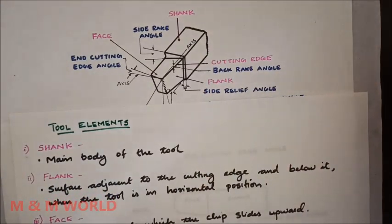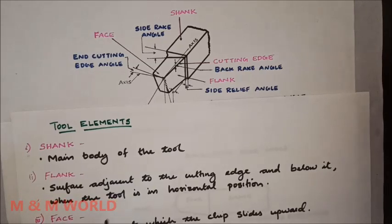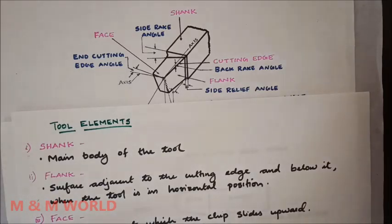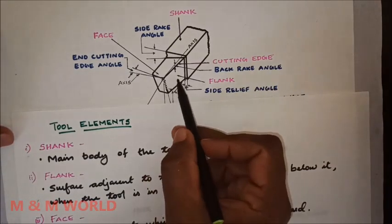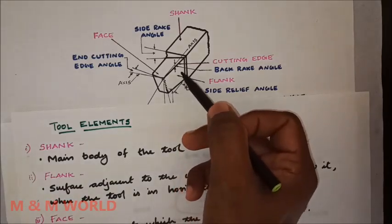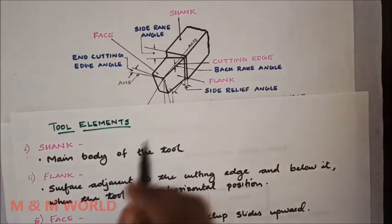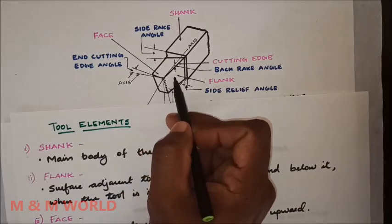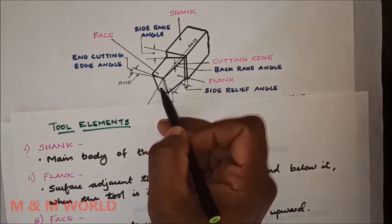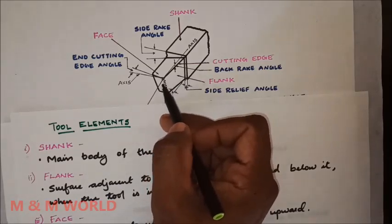The second element is the flank. The flank is the surface adjacent to the cutting edge and below it when the tool is in horizontal position. It is the surface that faces the workpiece. There are two flank surfaces: the side flank and the end flank.